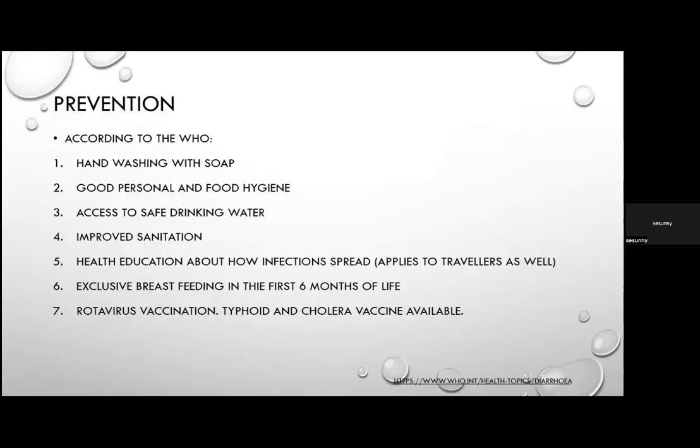Prevention according to the WHO includes seven main steps: hand washing with soap; good personal and food hygiene including proper preparation and storage; avoiding high-risk foods such as soft cheese from unpasteurized milk, undercooked meat and seafood; access to safe drinking water; improved sanitation; health education about infection spread, including for travellers; use of IPC in hospitals, childcare, and nursing home settings; educating about appropriate use of antibiotics and PPIs; advising symptomatic patients to refrain from recreational water activities, food preparation, and sexual activity. Exclusive breastfeeding for the first six months, rotavirus vaccination for children, and typhoid and cholera vaccines for travellers to endemic areas are also recommended.